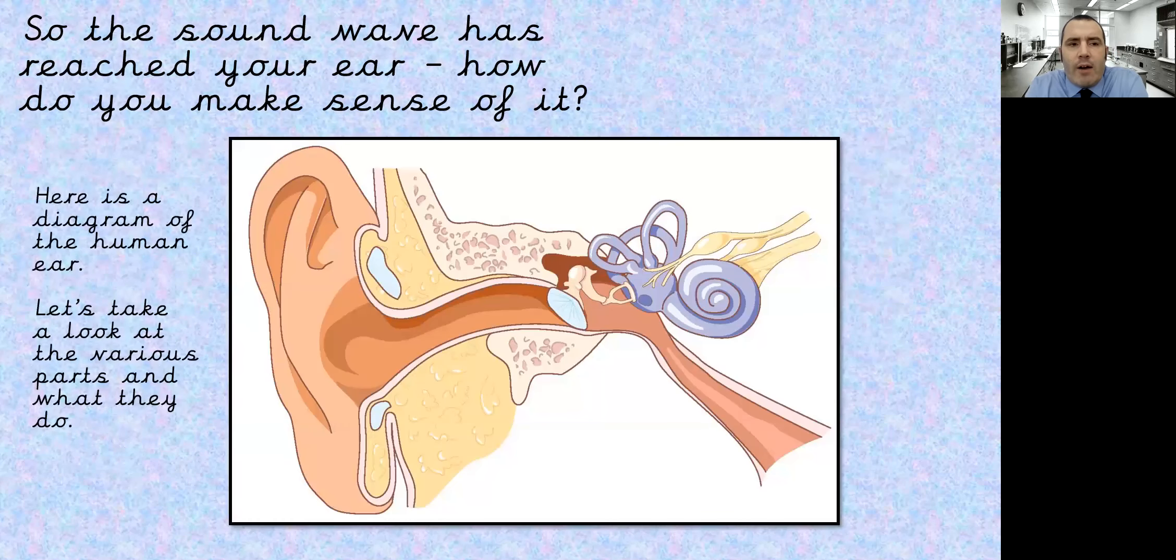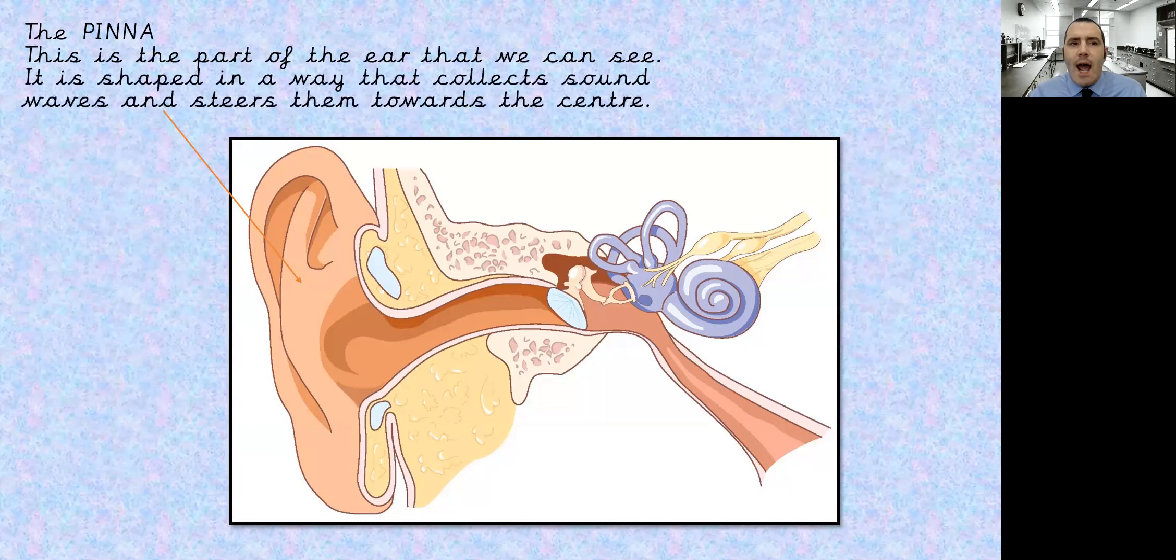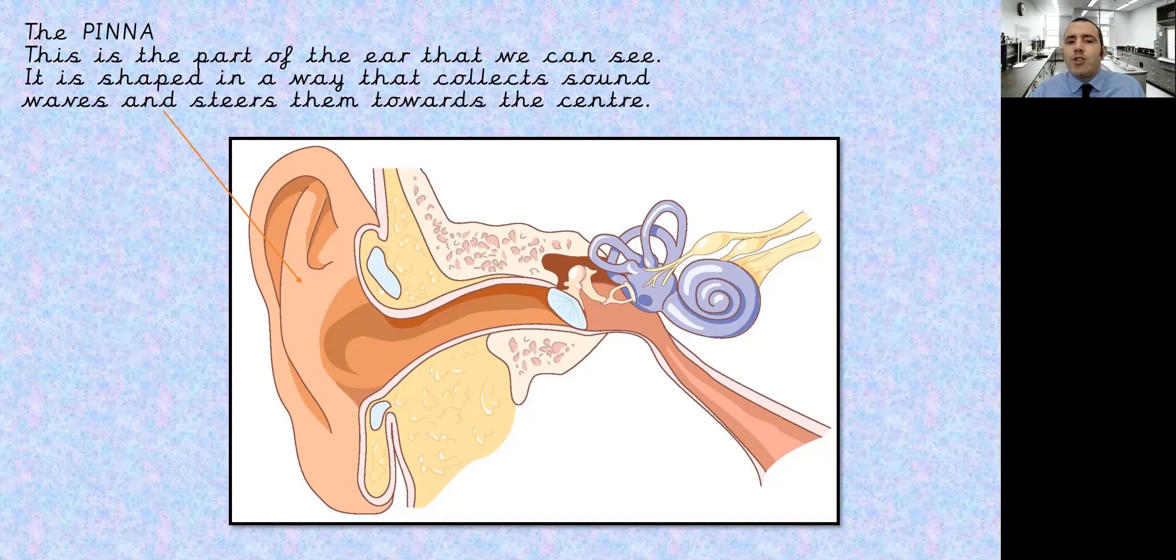So here's a diagram of the human ear, and we're going to take a closer look at the various parts and what they do. The pinna. This is the part of the ear that we can see. Its shape collects the sound waves and guides them in and steers them towards the center. And you can do a really interesting experiment. You can make them bigger. If you put your hands behind your ears like this, you look a bit silly. But if you're trying to listen to something, just have a try.